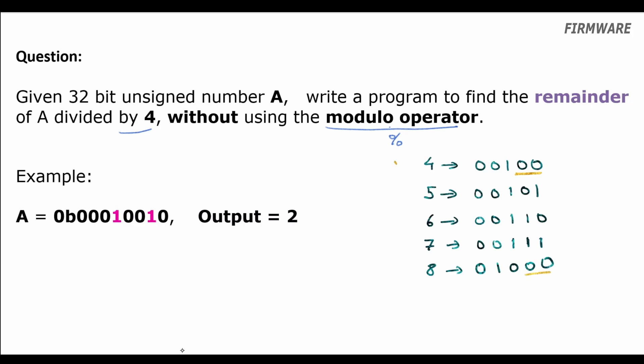So, LSB and the bit next to it will be 0. And the numbers which are not a multiple of 4 won't have both its LSB and the adjacent bit as 0. So basically, the number A modulo 4 is the value of these two bits LSB and the adjacent bit of that number A.